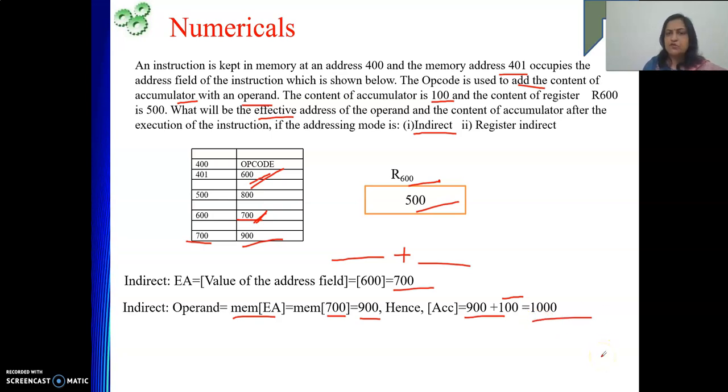The next one is register indirect. In case of register indirect, where is your address of the data? Inside one register. Here our register is R600. What is there inside R600? 500. So 500 will be your effective address. At 500, we are getting 800. 800 is my operand. With that, we will be adding 100. Please do not add this 1000, because each of these addressing modes will be independent for us. Previous content of accumulator was 100. With this 100, we are going to add the content of 500 location, which is 800. So answer will be 900.